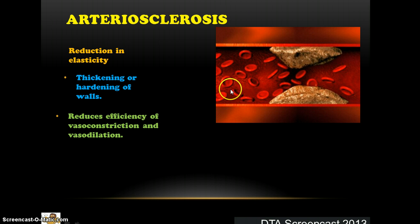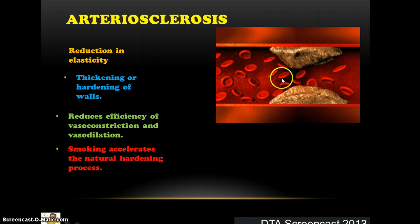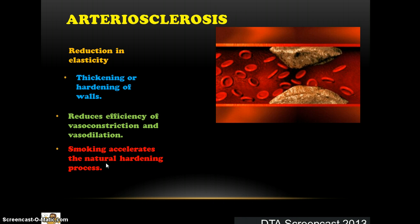One knock-on effect of this is a reduction in vasoconstriction and vasodilation. Think of something supple that's able to constrict and dilate because of its elasticity — like a balloon — compared to a hard plastic pipe that can't constrict or dilate. As blood passes through, there is a greater force applied against it. A potential blockage can occur if you get a blood clot. Smoking accelerates this natural hardening process, and if you start smoking younger the process begins earlier — blood clots are two to four times more likely to occur.